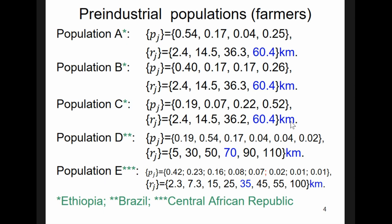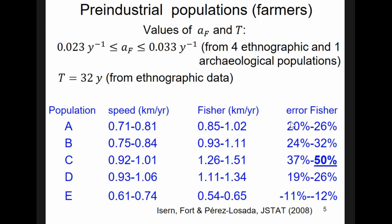We don't have exact distances, because in ethnographic work, what is reported are the histograms. They put the distances in some intervals. But using these ethnographic real values for pre-industrial farmers, and using also ethnographic, so realistic values for the initial growth rate and the generation time, we can find the speed from this precise equation and compare it to Fisher's for each of these five populations. And here we find that Fisher gives a larger speed, as much as 50%.